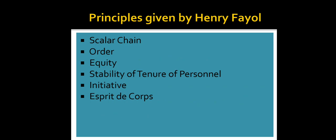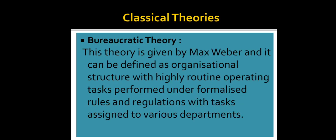Those were the 14 principles given by Henri Fayol, completing our second theory — administrative theory. The third classical theory is bureaucratic theory, given by Max Weber. It can be defined as an organizational structure with highly routine operating tasks performed under formalized rules and regulations, with tasks assigned to various departments. The structure involves hierarchy, division of work, rules and regulations, departmentalization, records, rationality, and a narrow span of control — work is delegated across departments.